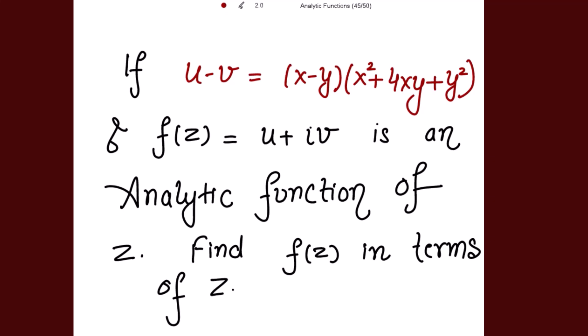Since f(z) is an analytic function given to us and u minus v is given to us, I will define a function capital F(z) to be equal to U plus iota V where U and V are in capitals. I take U to be u minus v as given, and V to be u plus v. Then I will find F'(z) and using the Millie-Thomson method I get f(z) in terms of z.